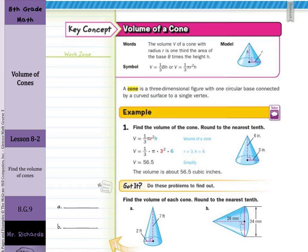In our first guided example, find the volume of a cone, round to the nearest tenth. Our radius is 3 and our height is 6. Setting up our formula: volume equals one-third pi r squared h. We substitute in 3 for the radius and 6 for the height. Make sure you square that 3 first before you multiply any of these numbers together — it's a good habit to get in. The answer is 56 and five-tenths cubic inches.